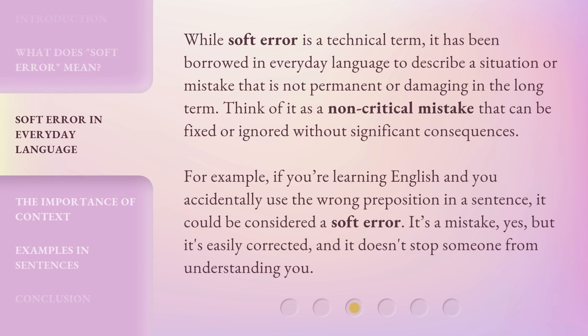While soft error is a technical term, it has been borrowed in everyday language to describe a situation or mistake that is not permanent or damaging in the long term. Think of it as a non-critical mistake that can be fixed or ignored without significant consequences. For example, if you're learning English and you accidentally use the wrong preposition in a sentence, it could be considered a soft error — it's a mistake, but it's easily corrected, and it doesn't stop someone from understanding you.